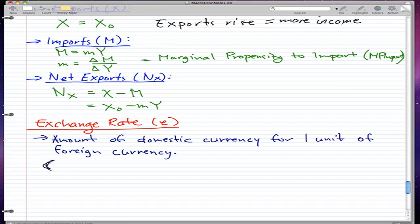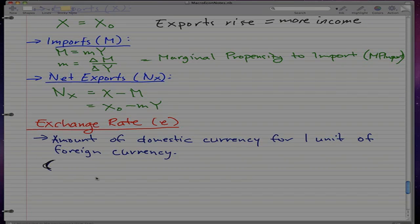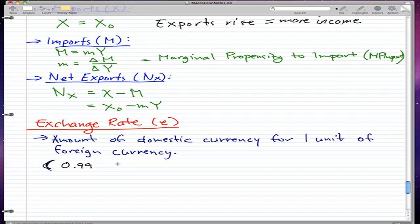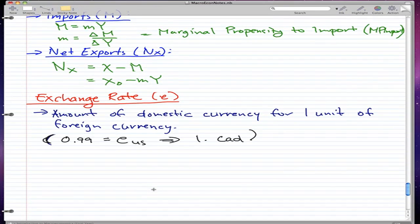For example, in my notes—let me check—right now a dollar Canadian equals 99 cents US. If we give a dollar of Canadian money, we get back 99 cents in US. That's the idea of the exchange rate.